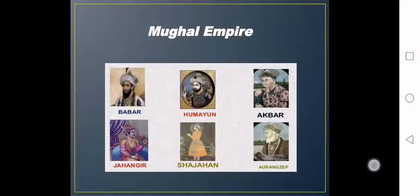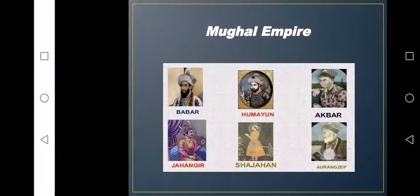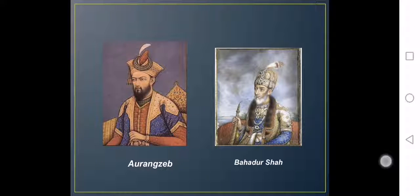The Mughal Empire ruled for 2 centuries, which means 200 years. The last king, Aurangzeb, did lots of work for Islam. You can see Aurangzeb on the left side. He was the one who made thousands of copies of the Quran and gave them as a gift to everyone, and the purpose of this activity was to spread Islam in India. But when he passed away, the empire began to slowly decline and eventually collapse.